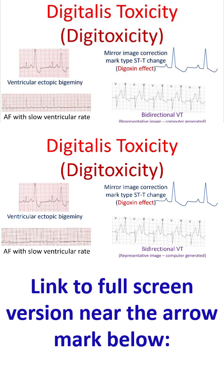Diuretics causing hypokalemia worsen the arrhythmias due to digitalis toxicity. Hypomagnesemia also worsens digitalis toxicity. Drugs like verapamil and amiodarone displace digoxin from plasma protein binding, raising active blood levels. As the excretion of digoxin is by the renal route, renal dysfunction is an important predisposing factor for digitalis toxicity.